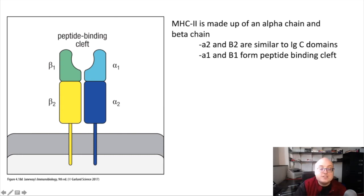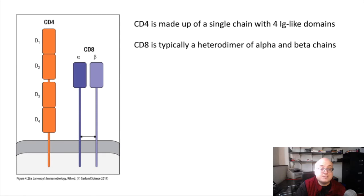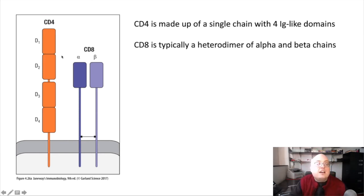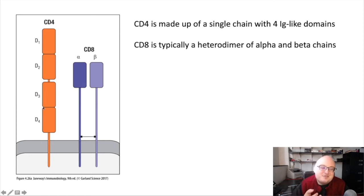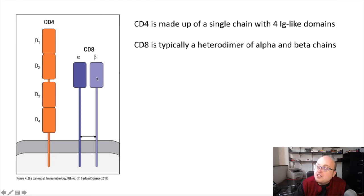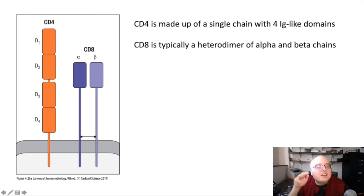Let's look at the co-receptors that facilitate the binding of the T-cell receptor to the MHC molecules. CD4 and CD8 look pretty different and are not very complicated. CD4 forms a rod-shaped structure with four domains—D1, D2, D3, and D4—forming a rigid stick that projects from the surface of the cell. CD8 has two chains: a simple alpha and beta chain. Because of their different structures, they're going to interact with the MHC molecule in slightly different ways.